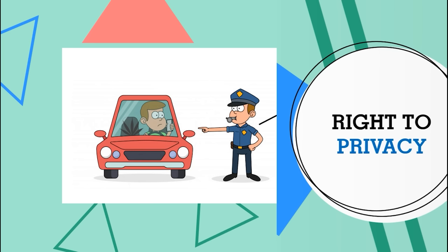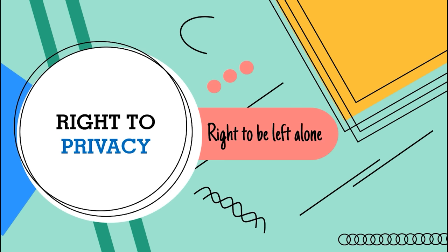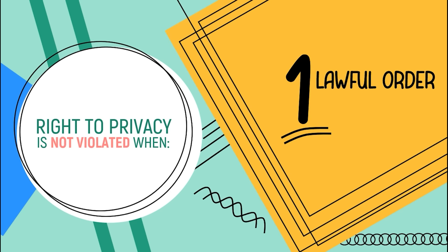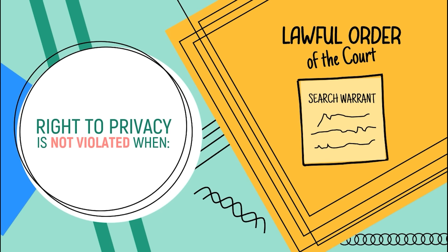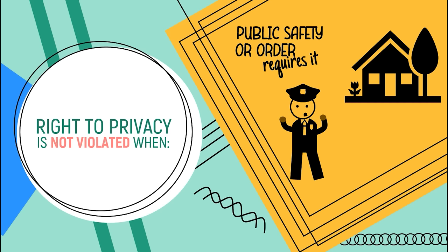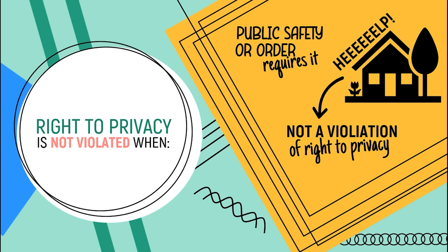Now let's move on to the right to privacy. This refers to the right of a person to be left alone. The right to privacy is not violated when, first, there is a lawful order of the court — for example, there is a search warrant. Second, when public safety or order requires it — for example, a policeman enters a house because someone is shouting for help. This is not a violation of the right to privacy.